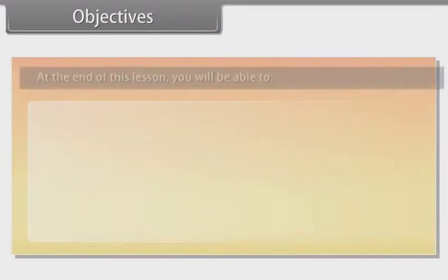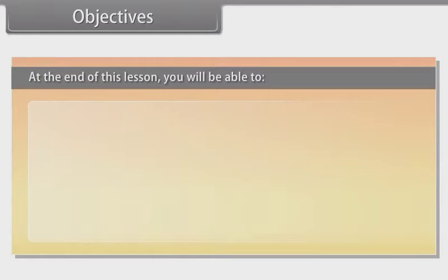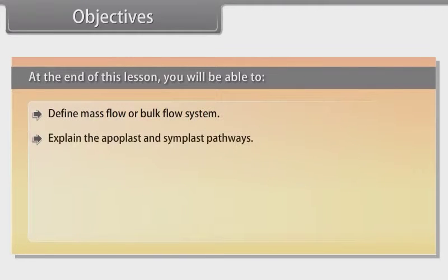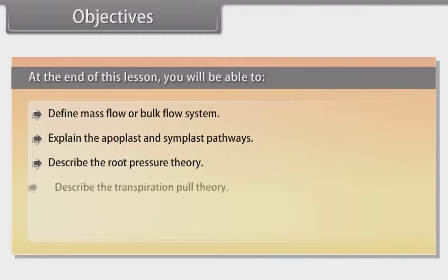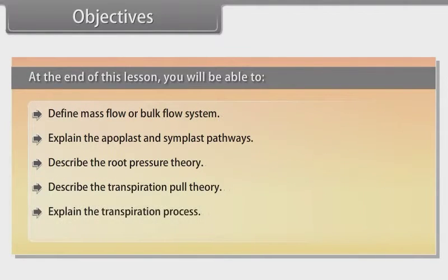Objectives. At the end of this lesson, you will be able to define mass flow or bulk flow system, explain the apoplast and symplast pathways, describe the root pressure theory, describe the transpiration pull theory, and explain the transpiration process.